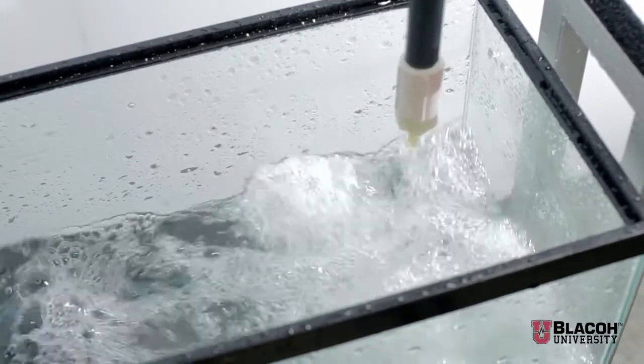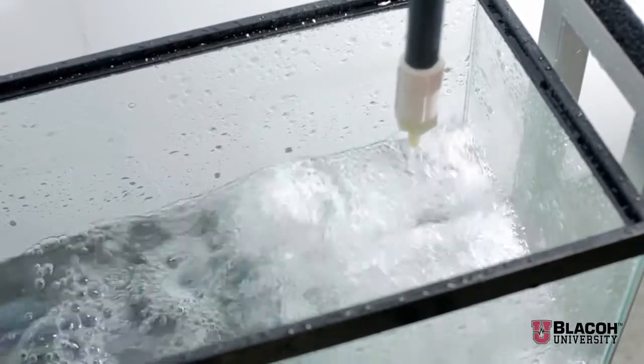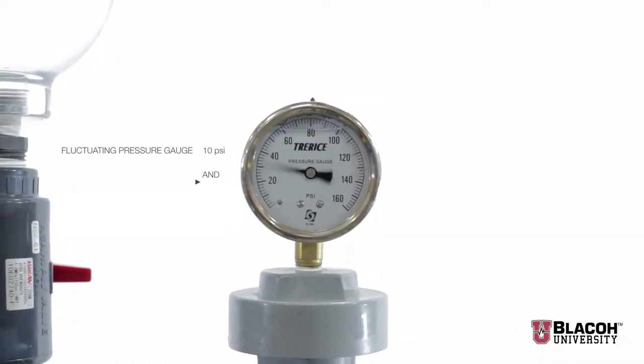That start and stop action can be observed in the system pressure gauge which is fluctuating between 10 and 50 psi.